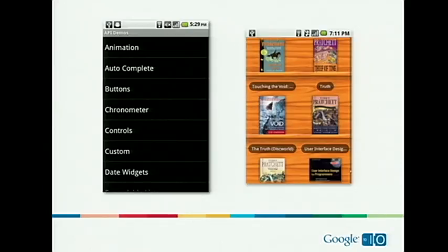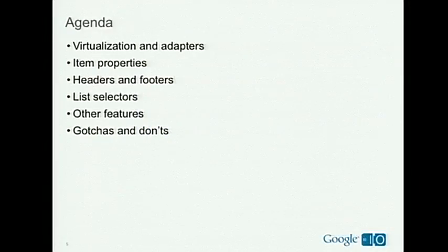You can do very complex things with ListView. On the right side you see an example app with a customized ListView — actually a GridView, which is very similar. You can customize the background, the selection, and have very complex items inside each row. Everything we're going to talk about today applies to ListView but also to GridView. Our agenda: adapters and virtualization, how ListView works inside, item properties, headers and footers, selectors, other features, and what you should never ever do with a ListView.